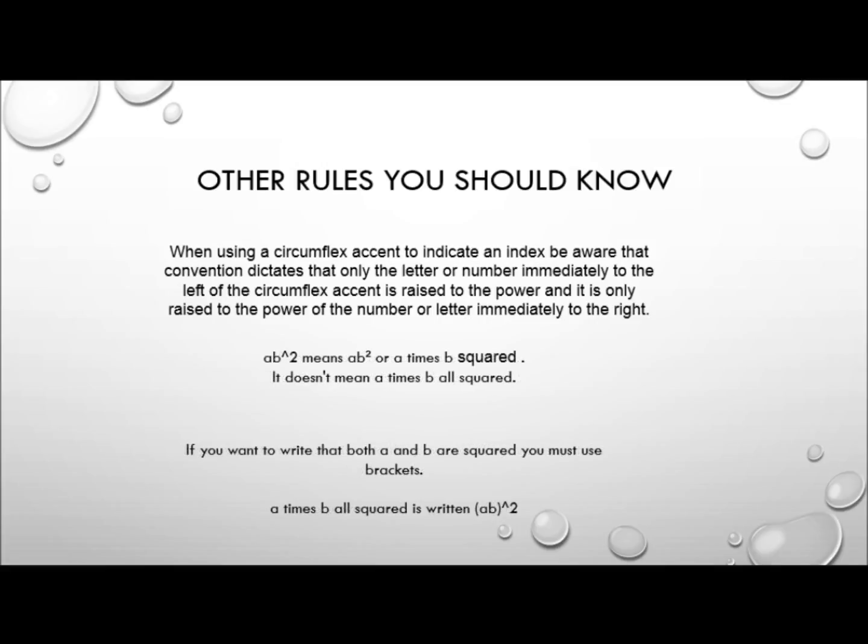In the same way, ab circumflex 2 means a times b squared — it doesn't mean a times b, all squared. If you want to write that both a and b are squared, you must use brackets: open brackets ab close brackets circumflex 2.